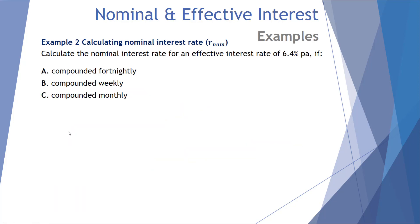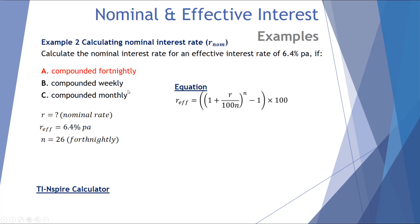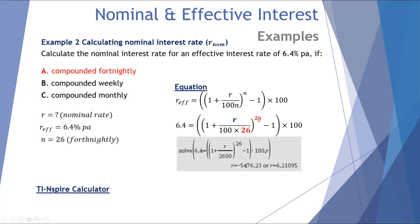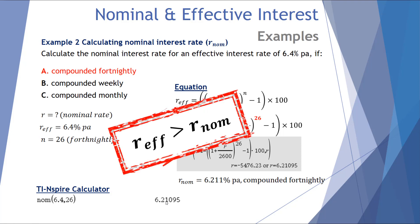Now let's look at the reverse: calculating the nominal interest rate for a given effective interest rate. Calculate the nominal rate for an effective interest rate of 6.4% per annum compounded fortnightly. Substituting 6.4 as the effective rate and N = 26, using the solve function gives R = 6.21% (discarding the negative solution). Using the NOM function on the TI-Inspire CAS calculator also returns 6.21%. Effective rate 6.4 is greater than nominal 6.2 — correct.